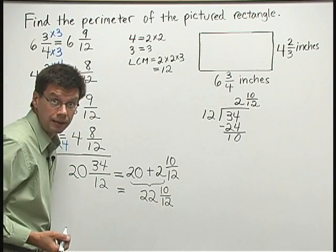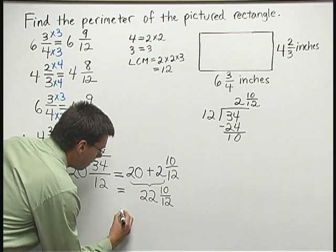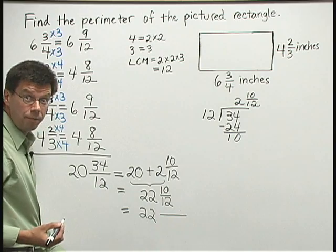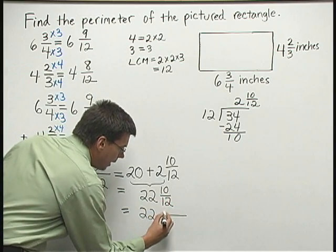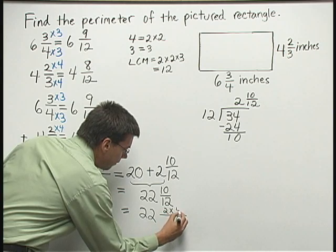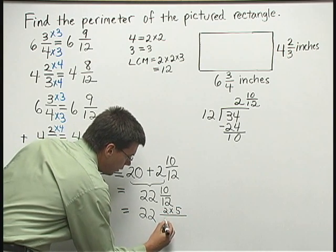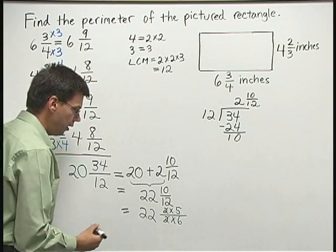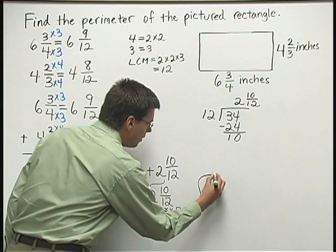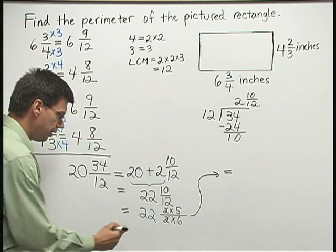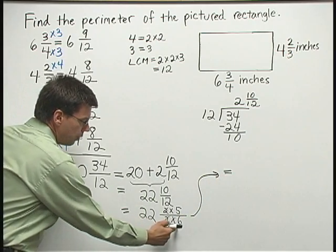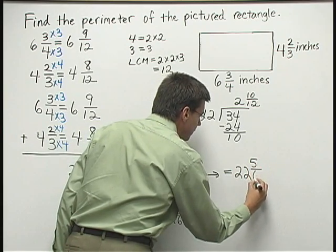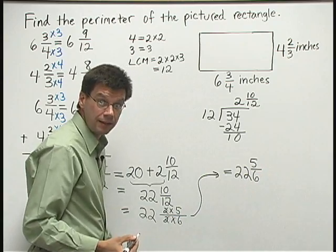Now there's still one more thing I can do to simplify here. I can reduce my ten twelfths. I have twenty-two, and now I'm going to break down the numbers above and below in my fraction. Ten is two times five over twelve is two times six. I can cancel a two above and below. So now I have my final result here. Twenty-two and five-sixths. That's twenty-two and five-sixths inches. And that's our measure of the perimeter of this rectangle.